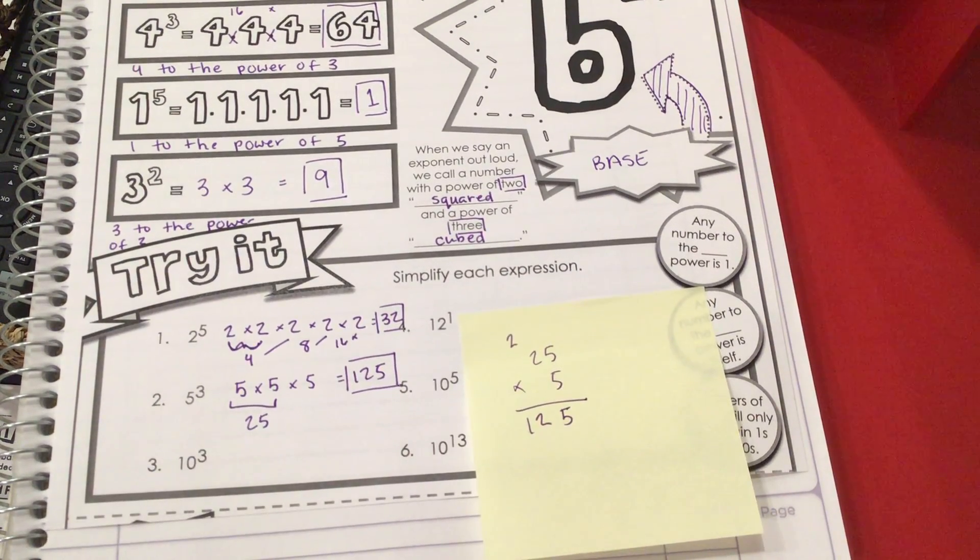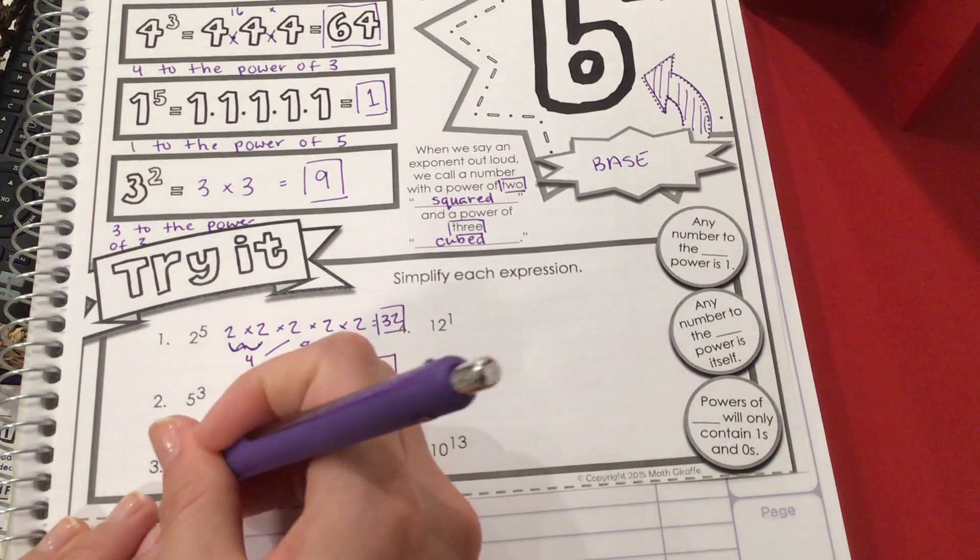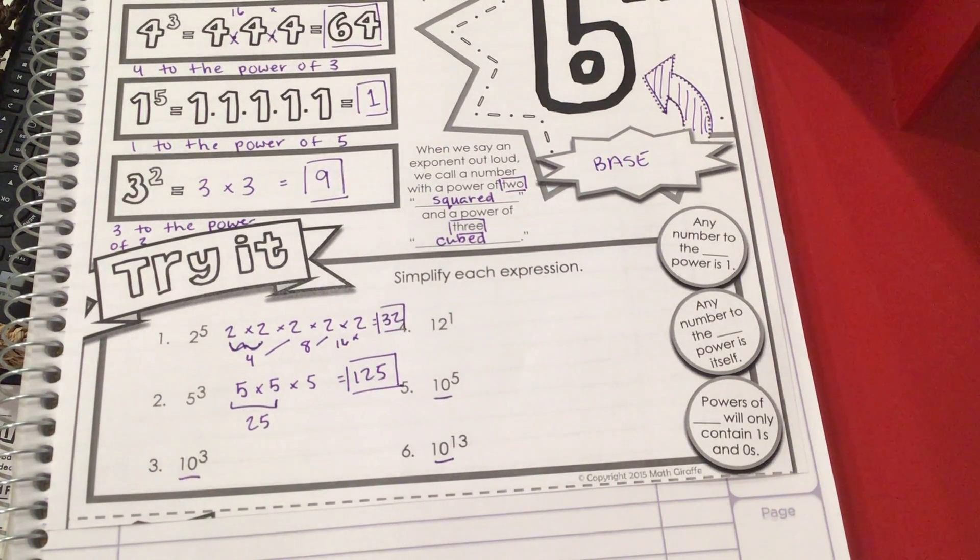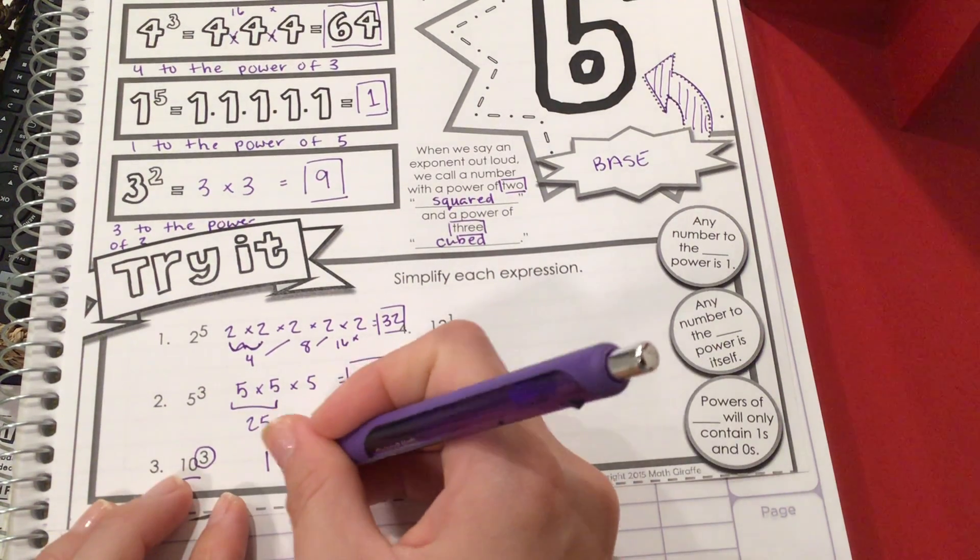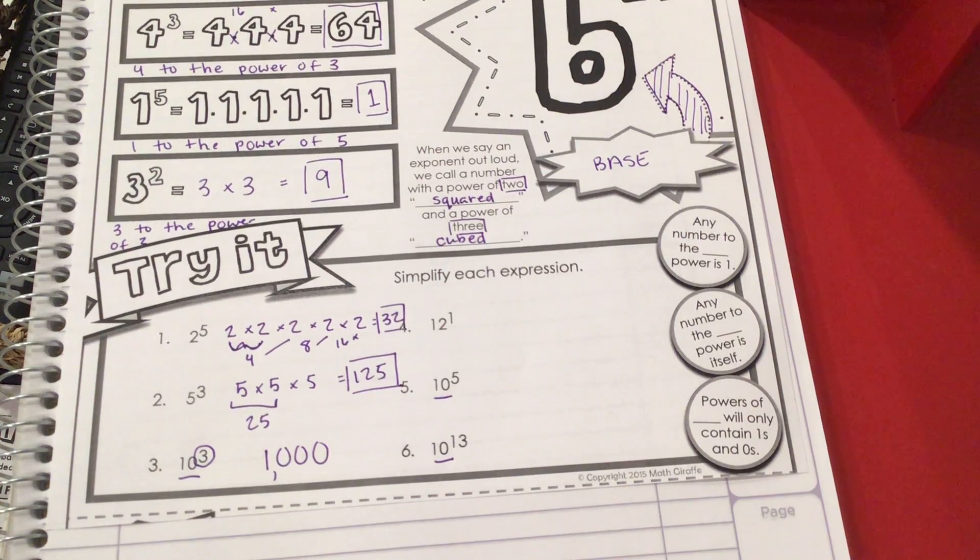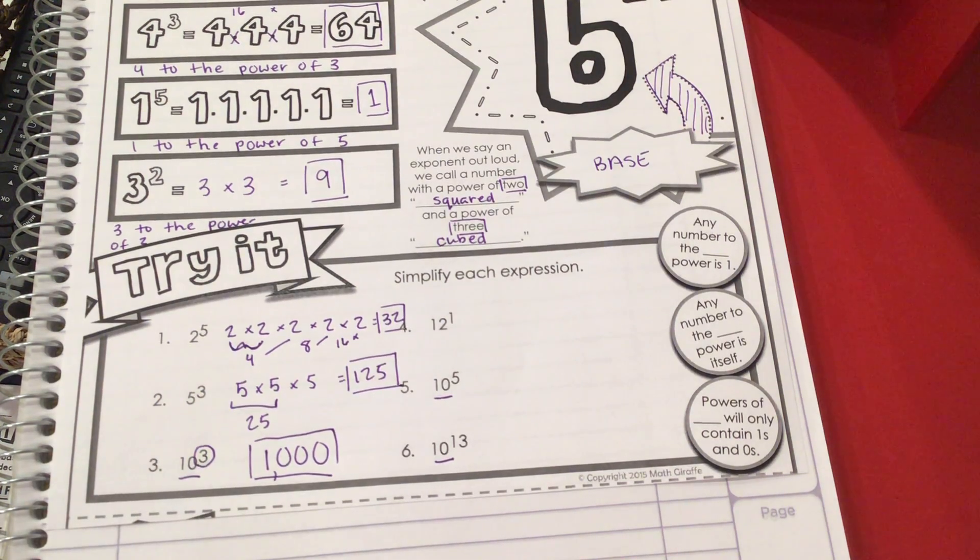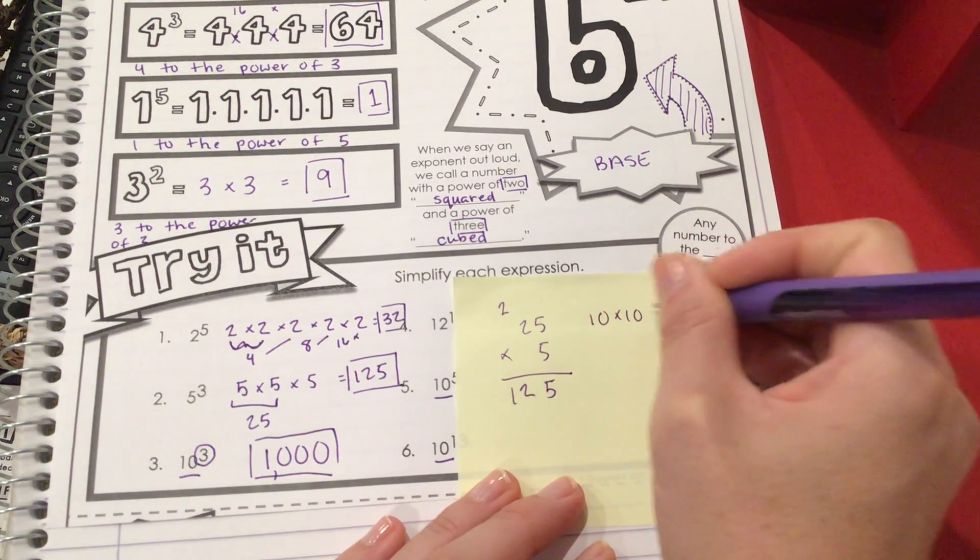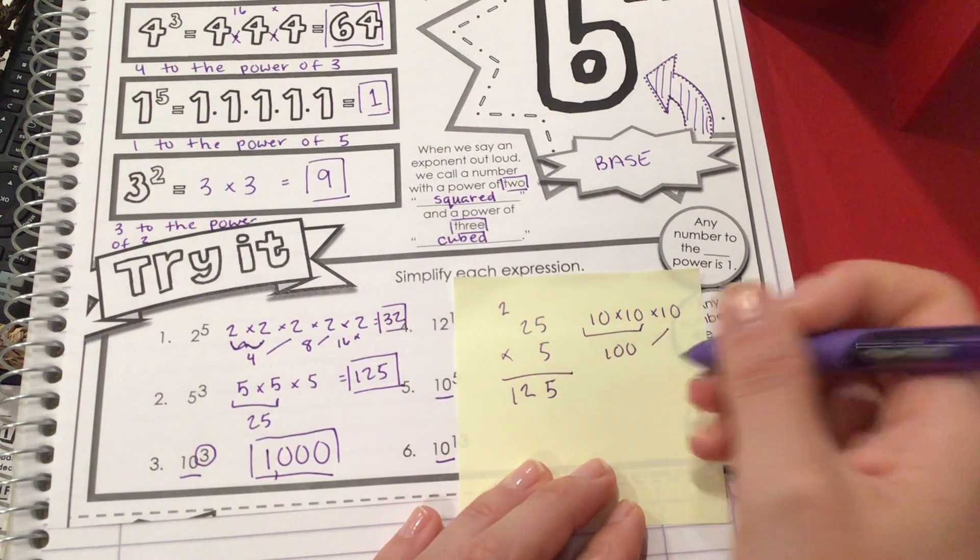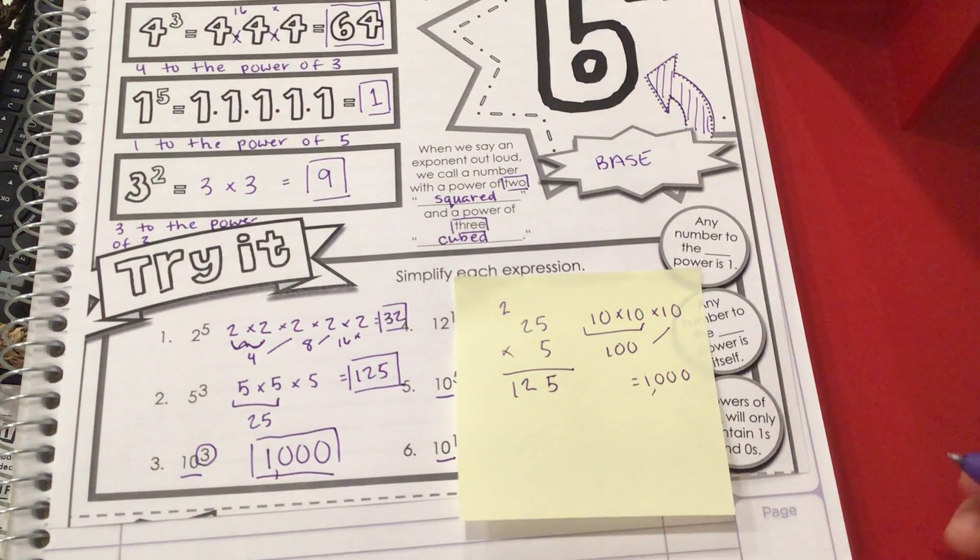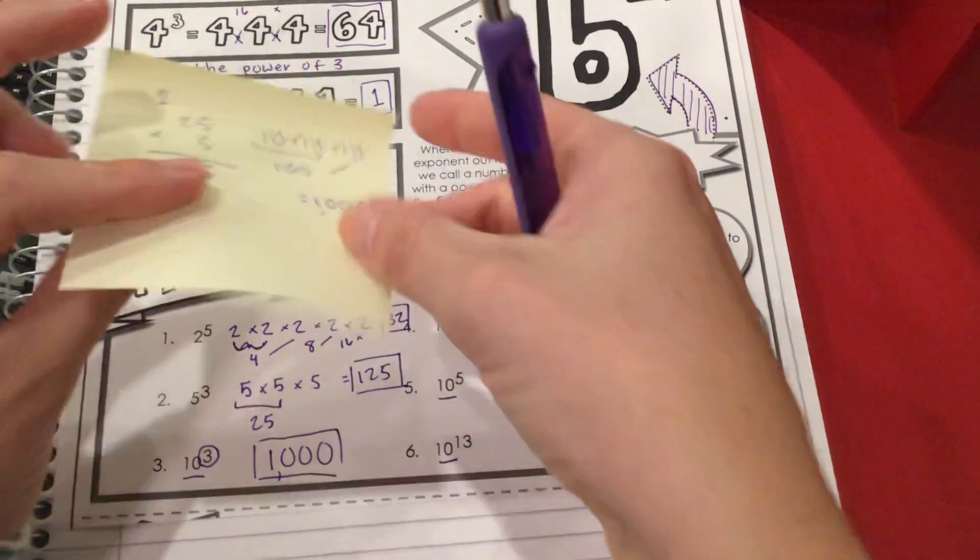Next we're going to talk about when we have 10 as our base. There's a shortcut or trick for this one. When you have a base of 10, whenever 10 is your main number, all you need to do is write the number 1, and then add however many zeros the exponent tells you to. So we add 1, 2, 3 zeros. That gives us 1,000, which is our answer. If we wanted to do it out to show how this works, we'd have 10 times 10 times 10. 10 times 10 is 100, 100 times 10 is 1,000. That trick always works when you have a base of 10.